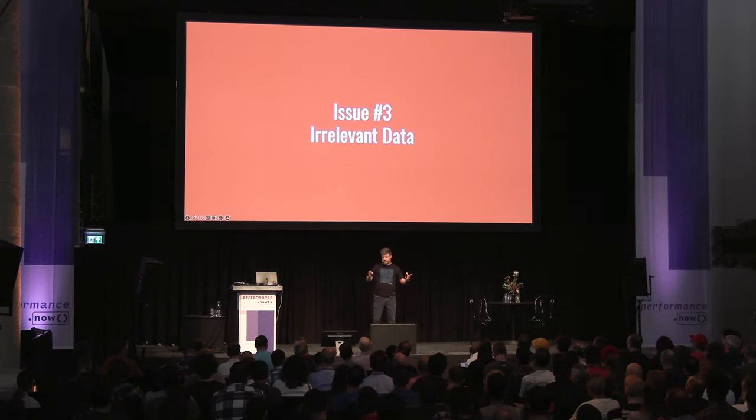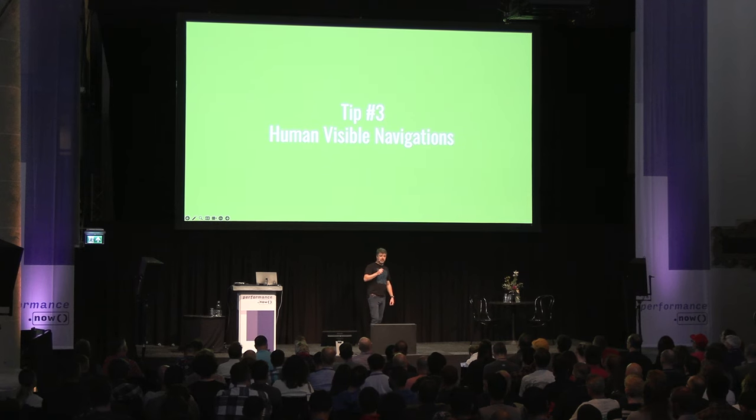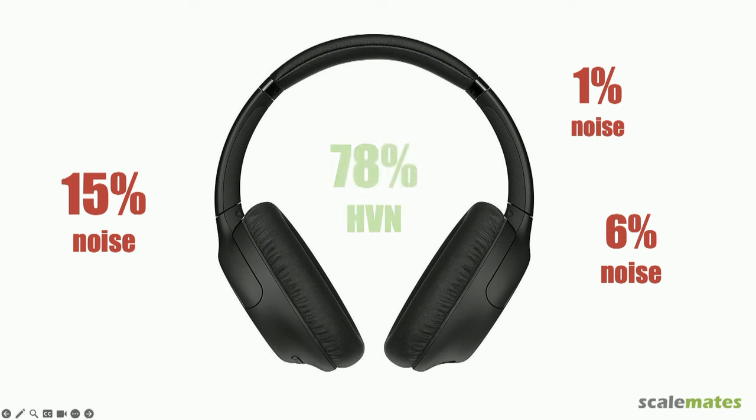Now let's look at the fun part. RUM contains a lot of irrelevant data — useless data, worthless data. My advice: always focus on human visible navigations. If it's not human, not visible, and not a navigation, skip it by default. The noise levels of non-human visible navigations is 22%. So one out of four or five, depending on your website, is noise. There are three sources: one at 15%, one at 1%, and one at 6%.